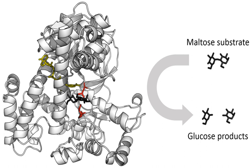A non-competitive inhibitor binds to a site other than where the substrate binds. The substrate still binds with its usual affinity and hence Km remains the same; however, the inhibitor reduces the catalytic efficiency of the enzyme so that Vmax is reduced. In contrast to competitive inhibition, non-competitive inhibition cannot be overcome with high substrate concentration.